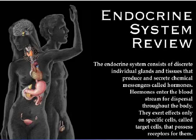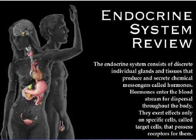The endocrine system consists of discrete individual glands and tissues that produce and secrete chemical messengers called hormones. Hormones enter the bloodstream for dispersal throughout the body. They exert effects only on specific cells called target cells that possess receptors for them.